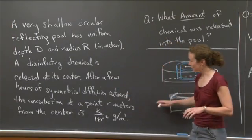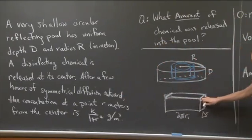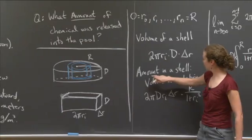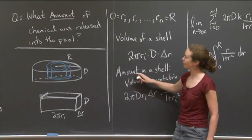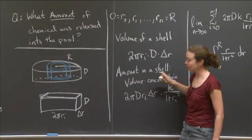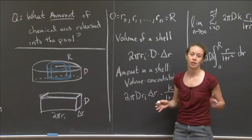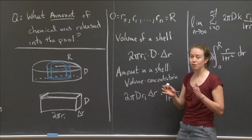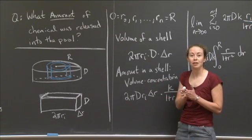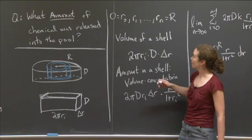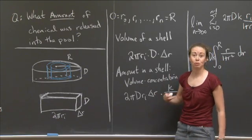And we determined the right function to find, if we move over here, we determined the right function to find the amount of chemical in a certain shell, assuming that the concentration was constant throughout that shell. And then what we do is we know that if we let those shells get arbitrarily narrow, that means that we're letting the number of radii over which we're doing this go to infinity.